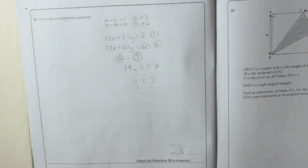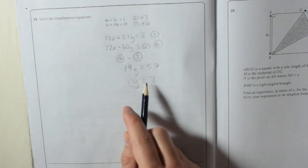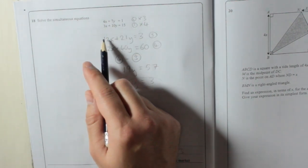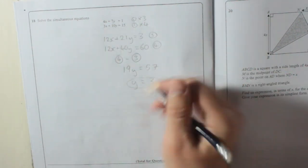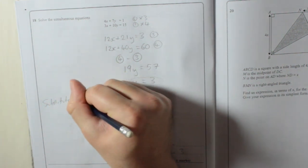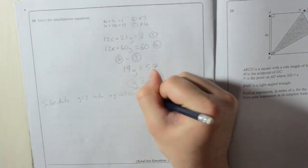Now to find x, we need to use substitution. Because we know that y is 3, we can put that into one of the original equations. I usually use the one with smaller numbers, so I'm going to use equation 1. Substitute y equals 3 into equation 1.